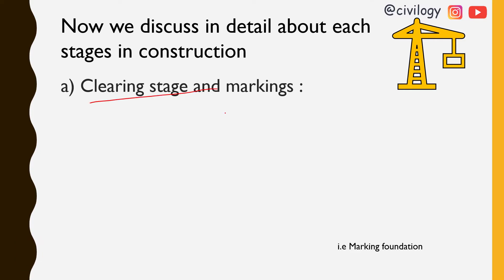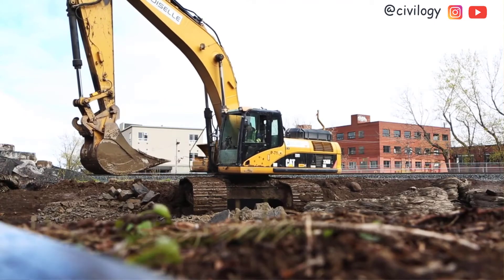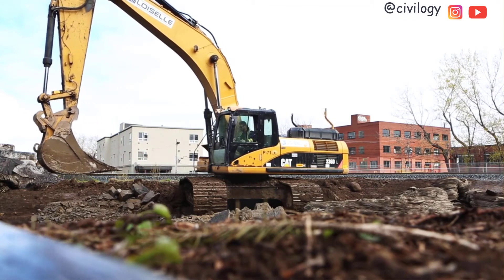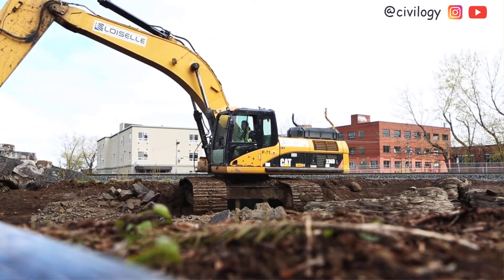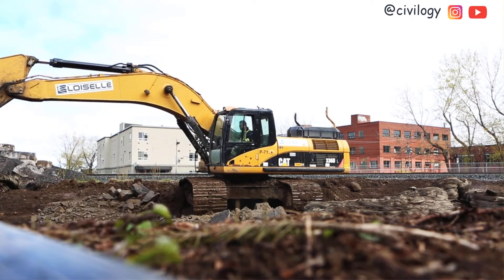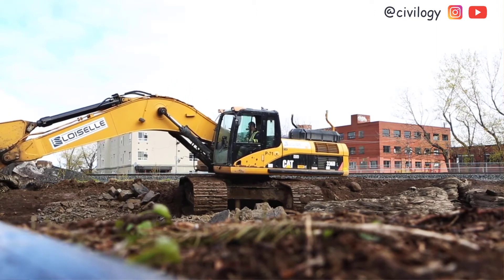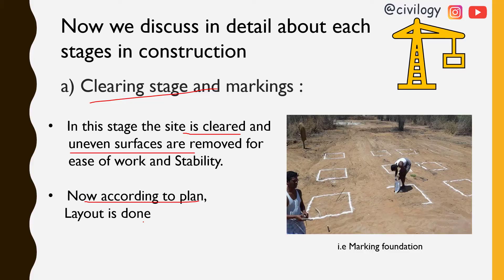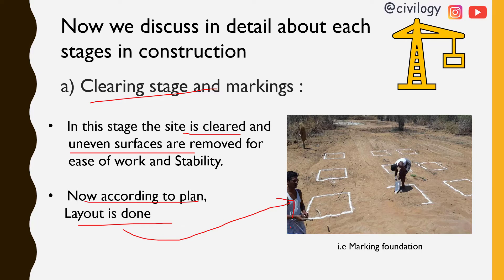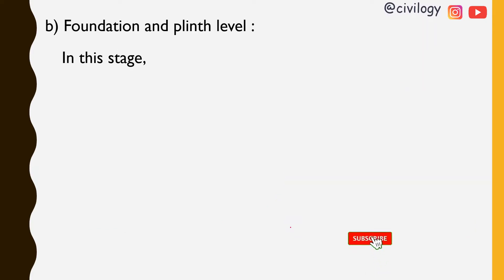In the clearing and marking stage, the site is cleared and uneven surfaces are removed for ease of work and stability. According to the plan, the layout is done — meaning the foundation positions are drawn on the site to guide excavation in the next stage.